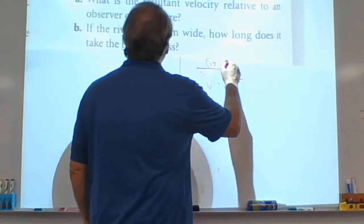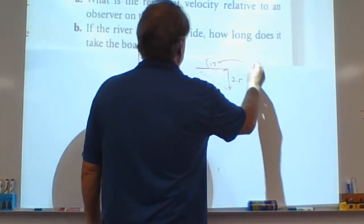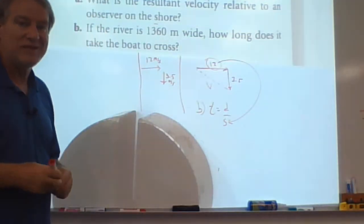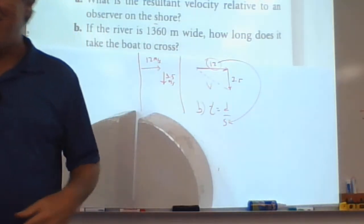So this becomes your speed right here, the 12. Your distance is 1360. Pretty easy to see how many seconds it gets to cross. All right. Let's look at the next one.